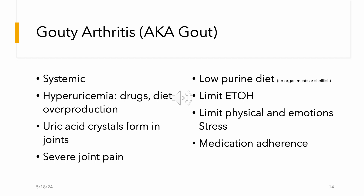Gout is a systemic problem due to hyperuricemia — a uric acid level greater than 6.8. It can be caused by certain drugs, diet such as eating organ meats or shellfish, or overproduction of uric acid. The uric acid crystals form in the joints causing severe joint pain, often first presenting in the big toe. Management includes limiting alcohol, following a low-purine diet with no organ meats or shellfish, limiting physical and emotional stress, and adhering to the medication regimen.